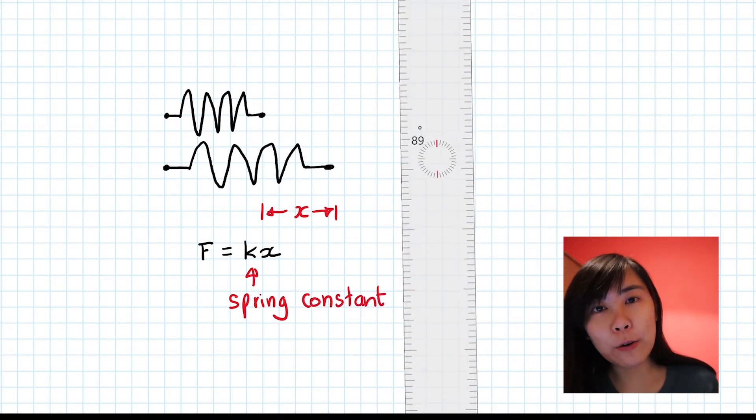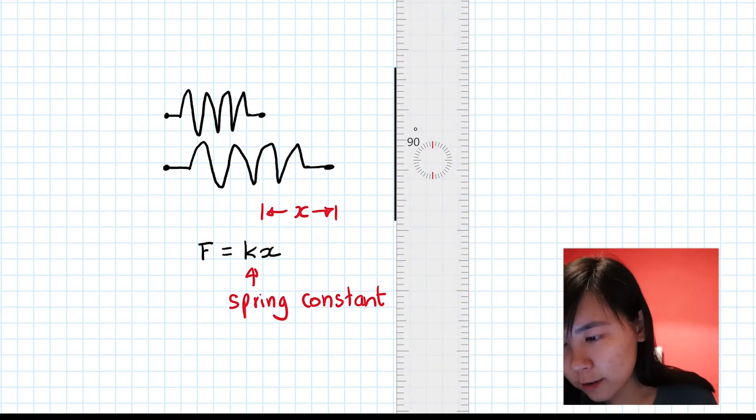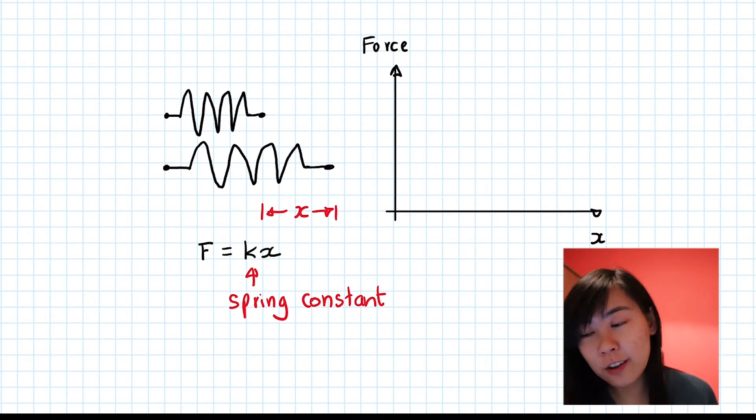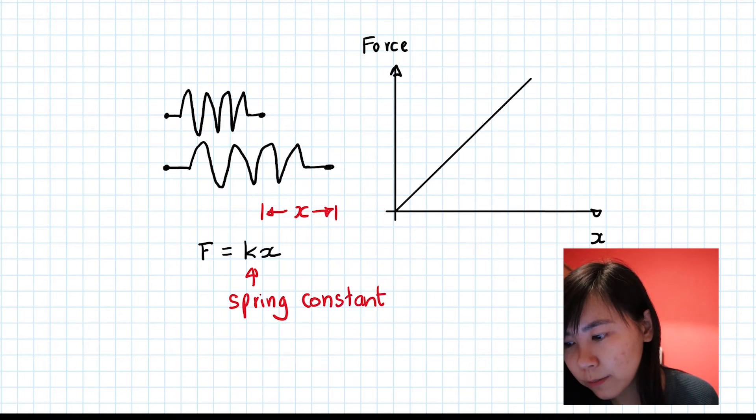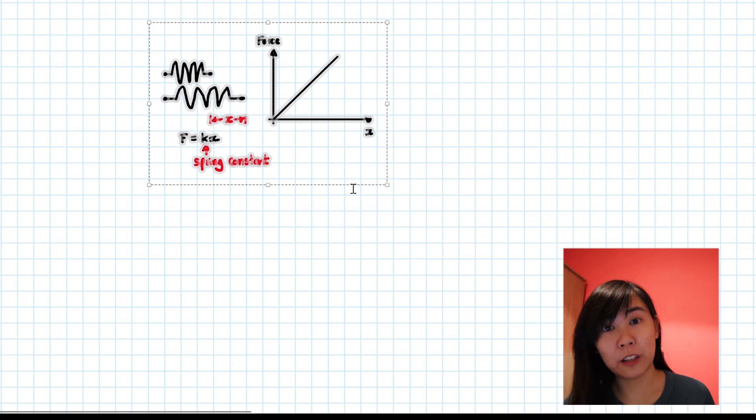We can plot a graph to show how the extension is going to vary with the stretching force. The convention is to put force on the y-axis and the extension on the x-axis. To show direct proportionality between force and extension, all we need is a straight line through the origin. So if an object obeys Hooke's Law, all of this will apply to that object.